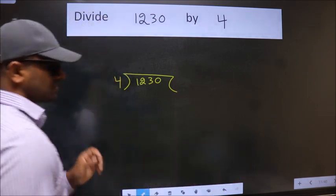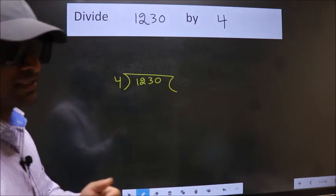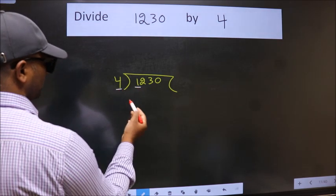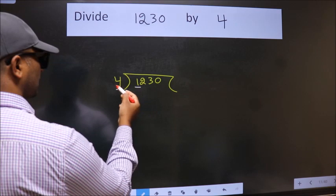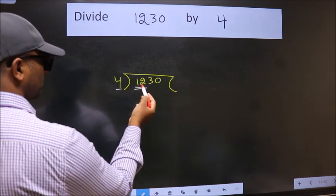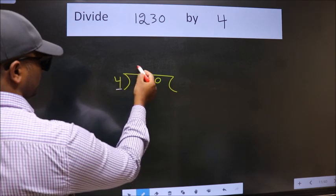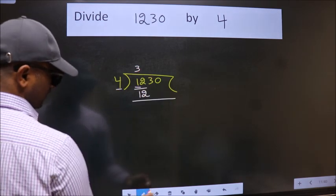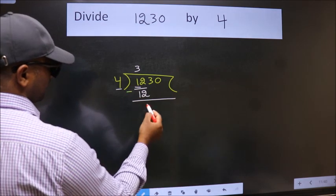This is your step 1. Next, here we have 1. Here 4. 1 is smaller than 4, so we should take two numbers: 12. When do we get 12 in the 4 table? 4 times 3 is 12. Now we should subtract. We get 0.